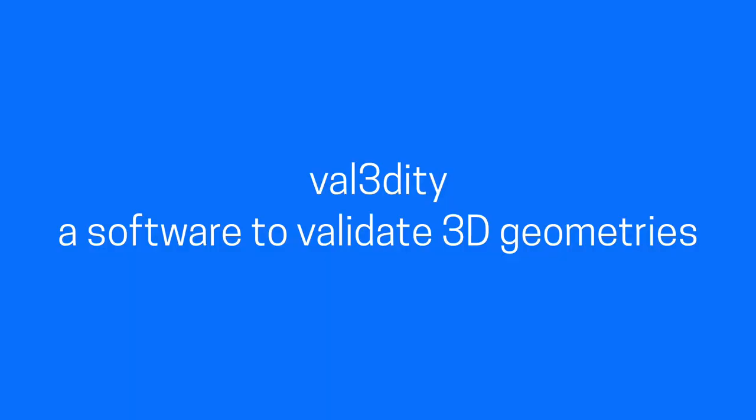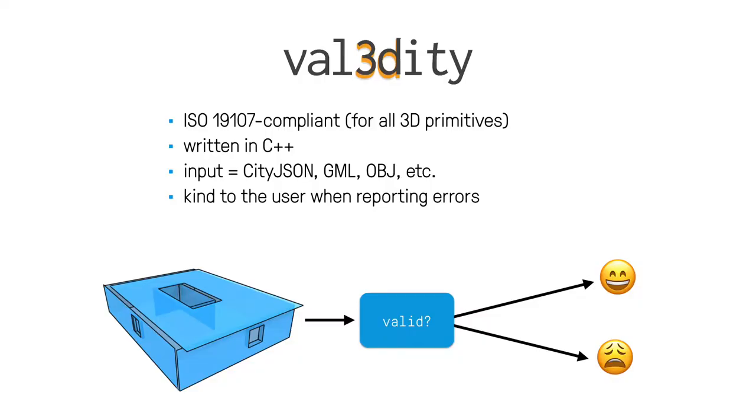While having agreed international definition is very important, having software that allows us to validate one instance of a 3D primitive against that definition is also very important. Val3dity is one such implementation. It's an open source software written in C++, so it's relatively fast, that can take as input several formats. For example, CityJSON, GML, and OBJ files are accepted as input. And it does one thing. So it reads the file and looks for all the 3D primitives in that file. All the ISO 19107 3D primitives are supported. And it validates them one by one. And it basically tells you if a primitive is valid or if it's not.